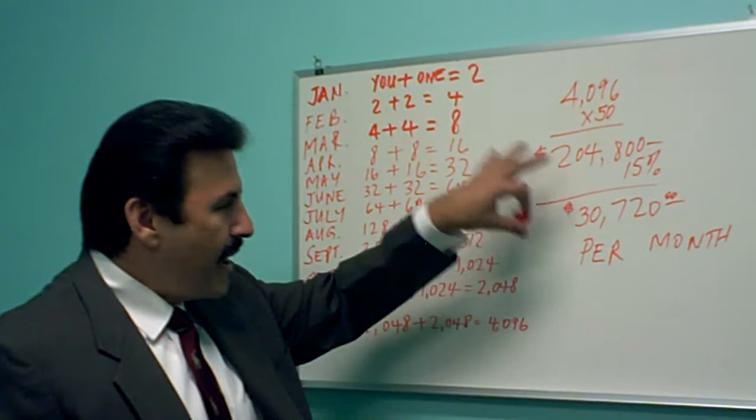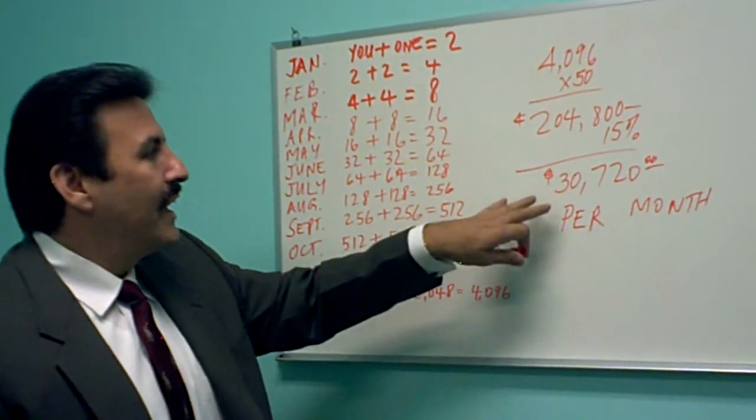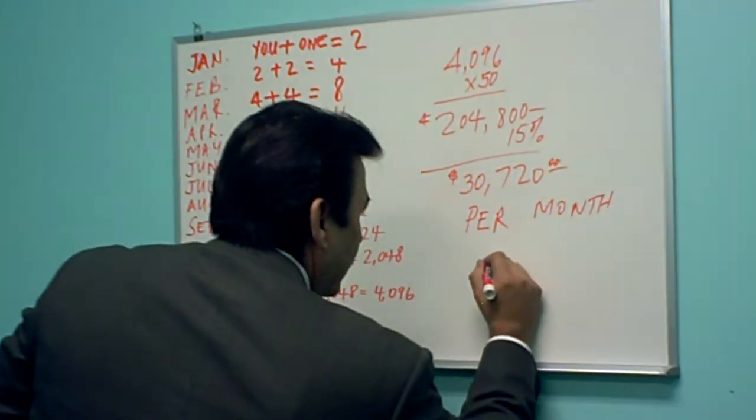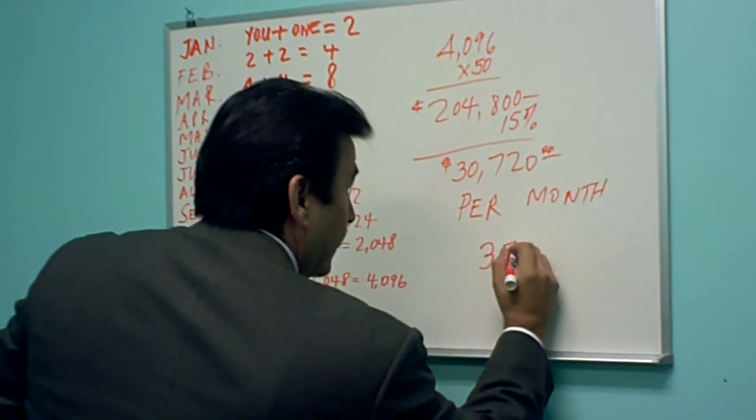Now suppose you don't manage to get to this point after one year. Suppose even that you only got to 10% of that. 10% of bringing in one person per month.